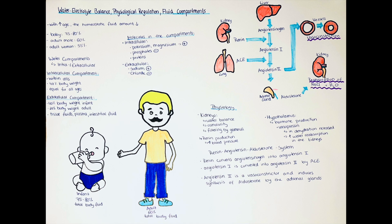In preterm infants — babies that are born too early — the total body fluid is generally a little higher than in full-term infants. In adult males, the body fluid level is around 60% on average. In women, it is generally slightly lower, averaging at around 55%. In essence, infants are born with higher fluid percentages and it gradually decreases with age.